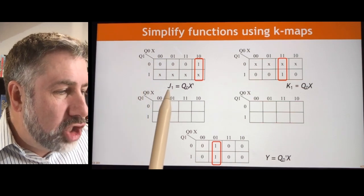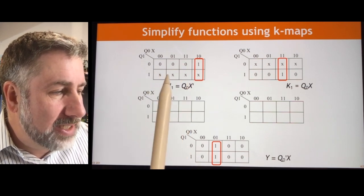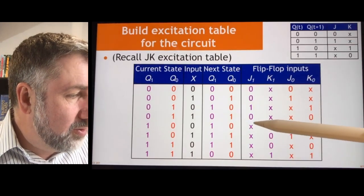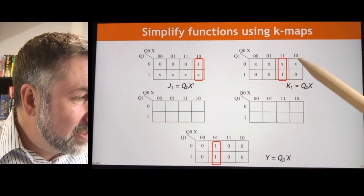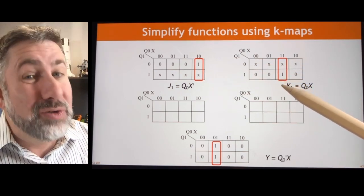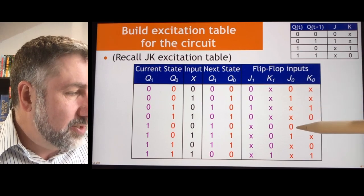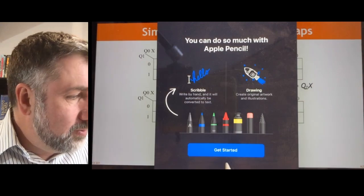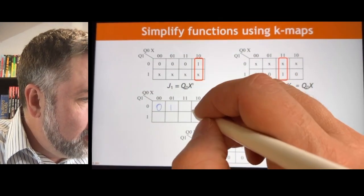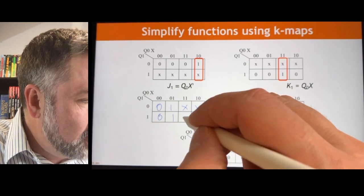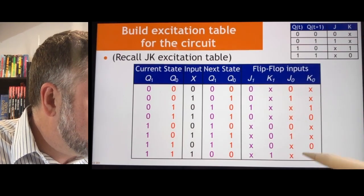The J input for the flip-flop 1 is 0010XXXX. For K1, it's XXXX1100. The J0 K-map is blank in the notes, so let's fill it in: 01XX, 01XX, reading from the excitation table — 01XX, 01XX. We can group those entries accordingly.